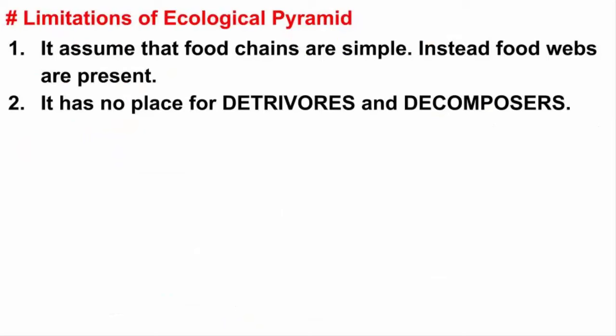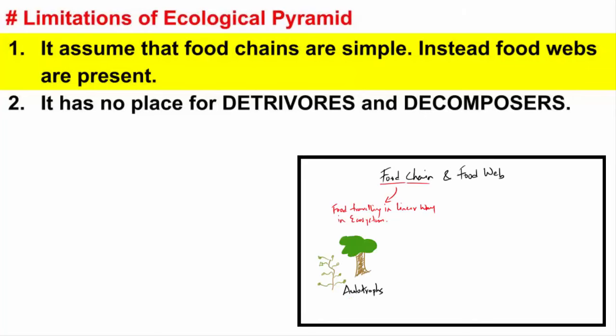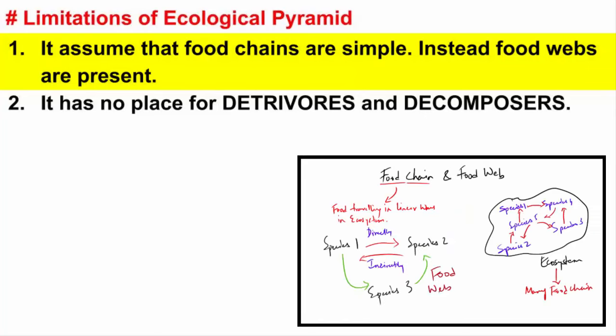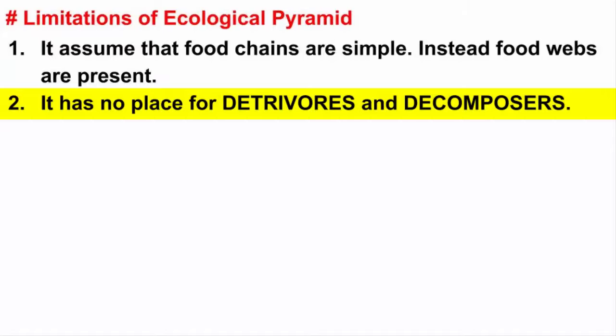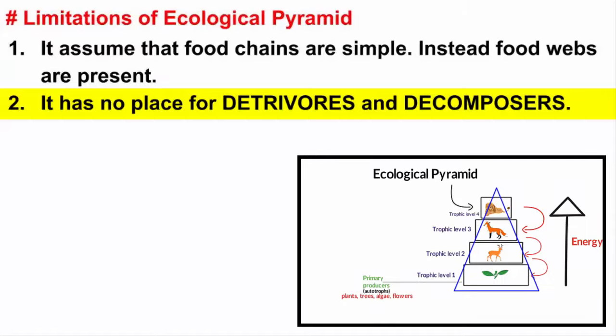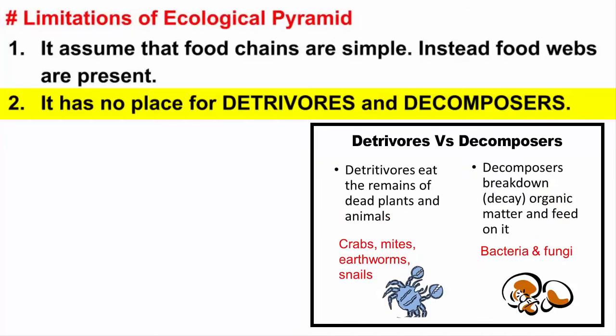One of the biggest assumptions of the ecological pyramid is that the food chain is very simple. But in reality, it is not. Instead, we have food chains and then we also have a food web. I have a video that will tell you the difference between a food chain and a food web. I recommend that you watch that video and you will get what I mean. Another limitation of this form of ecological pyramid is that, if you notice, the ecological pyramid consists of producers, herbivorous animals, then carnivorous animals. But then it has no place for detrivores and decomposers. Their role is to break down the dead plants and animals and pass the essential nutrients. And that's what makes them the most important part of any ecosystem. However, the ecological pyramid has no method of accommodating these vital microorganisms. So these are some of the limitations.